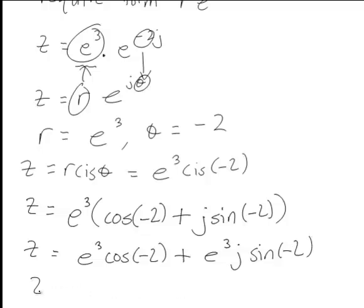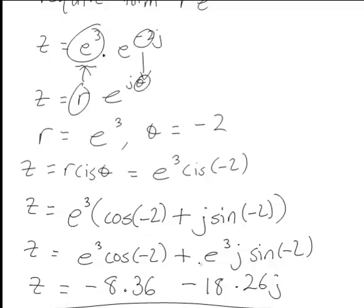Which in fact evaluates correct to two decimal places to just be negative 8.36 minus 18.26j. So these are several examples of converting from exponential form into Cartesian form.